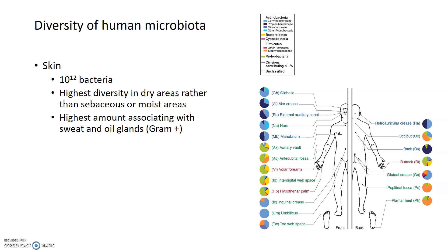An interesting factoid is that many deodorants contain antimicrobials specifically targeting gram-positive bacteria, because gram-positives are the bacteria that metabolize sweat and oil in the armpit. When they do, they produce unpleasant-smelling volatile compounds. By killing the gram-positives with deodorant, you are eliminating the source of those unpleasant smells associated with sweat and armpits.